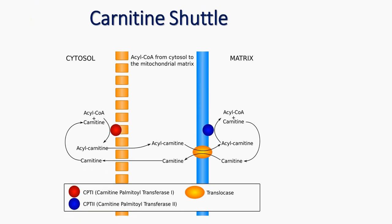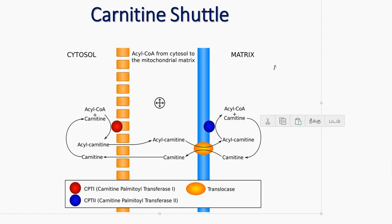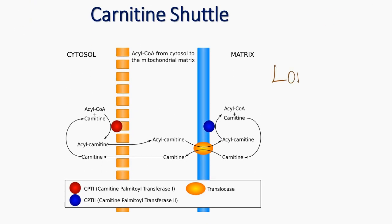Carnitine is needed for transport of long-chain fatty acids inside the mitochondrial membrane. Medium-chain fatty acids do not require carnitine — only long-chain fatty acids require carnitine.